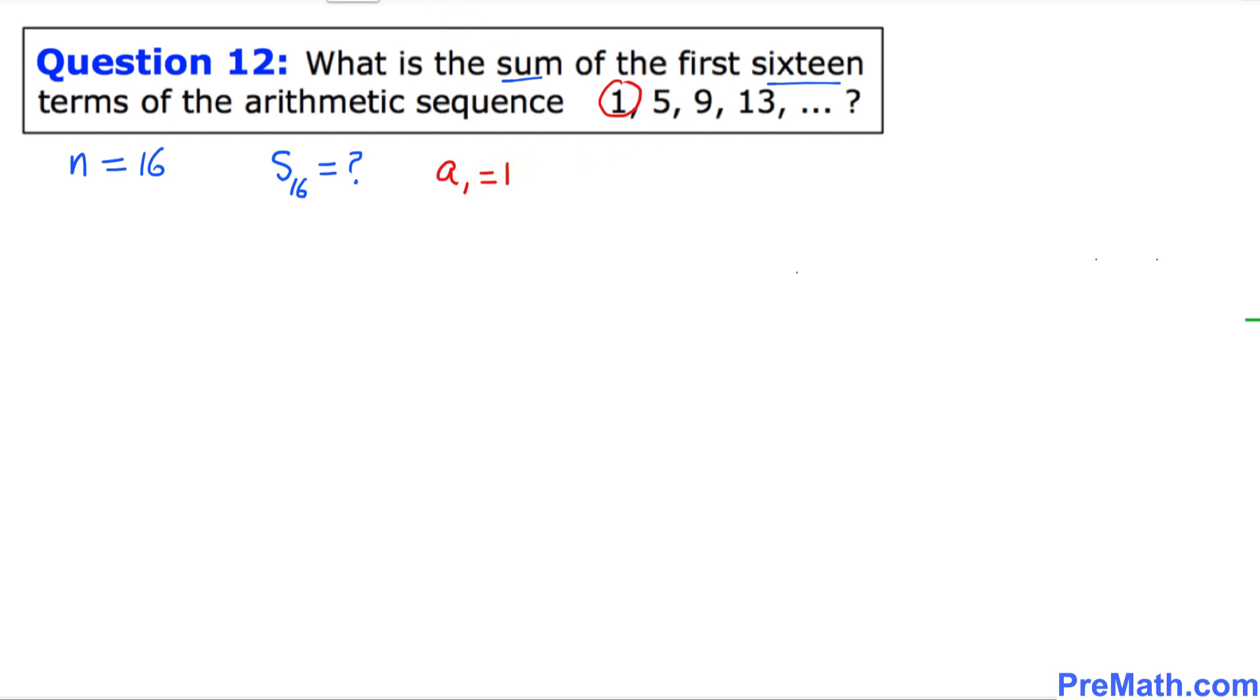And one more thing as you can see over here, our common difference between any two given consecutive terms is 4. So that means our d turns out to be 4.